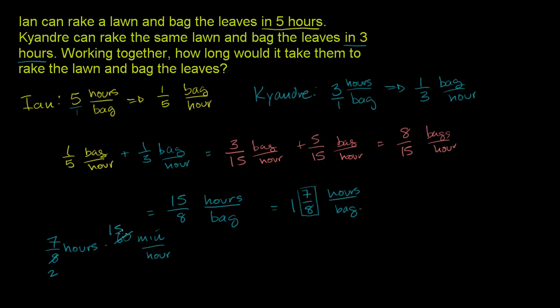7 times 10 is 70, plus 35 is 105. So this is equal to 105 over 2 minutes, which is equal to 52.5 minutes. So as a combined effort, it will take them 1 hour and 52.5 minutes to do it together. And we're done.